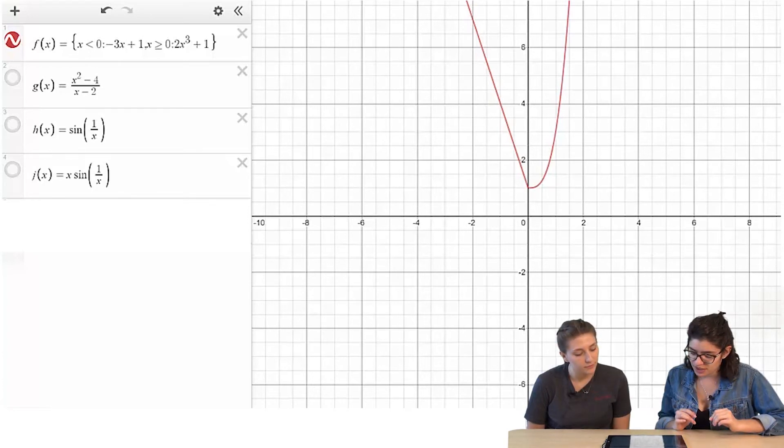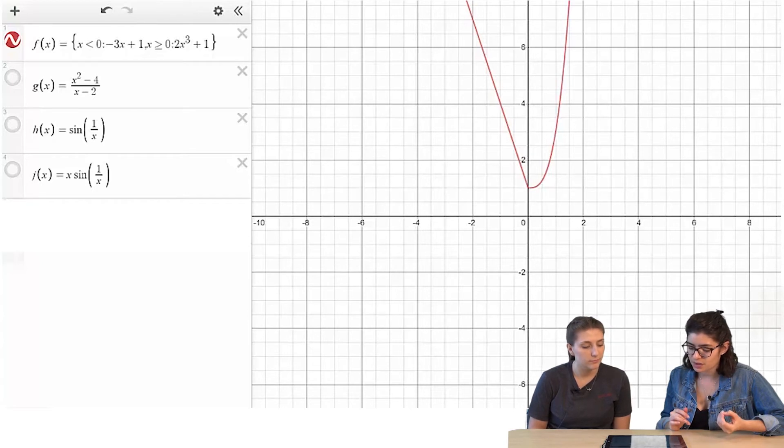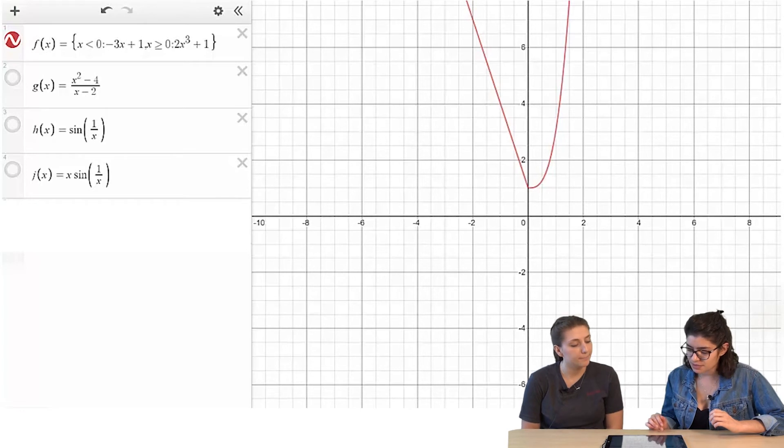For the first equation, you'd get negative 3 times 0 plus 1, so it's just 1. Right. And then the second, you'd get 1 as well, so 2 times x to the third plus 1, when x is at 0, which is 1. Yeah. So, I think it's continuous at 0. Okay. So, I think that one's good.